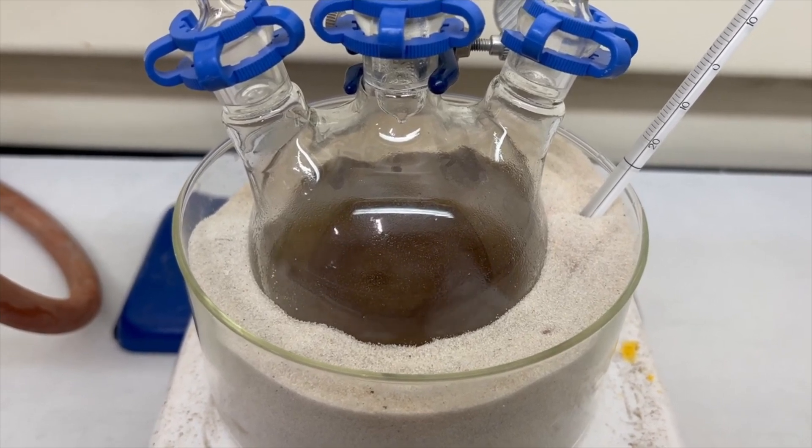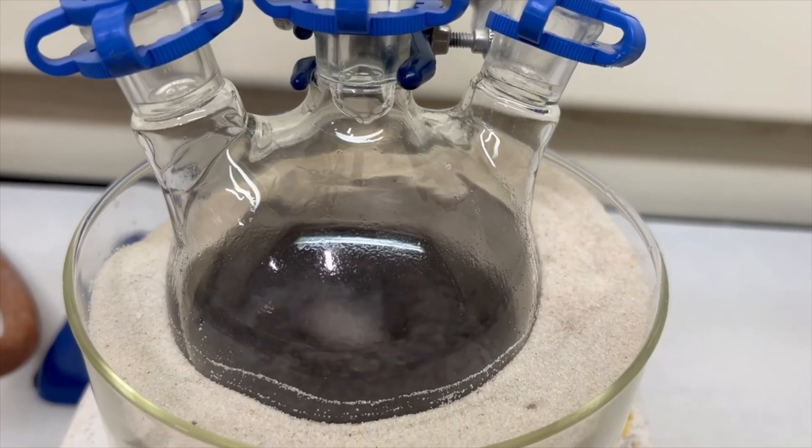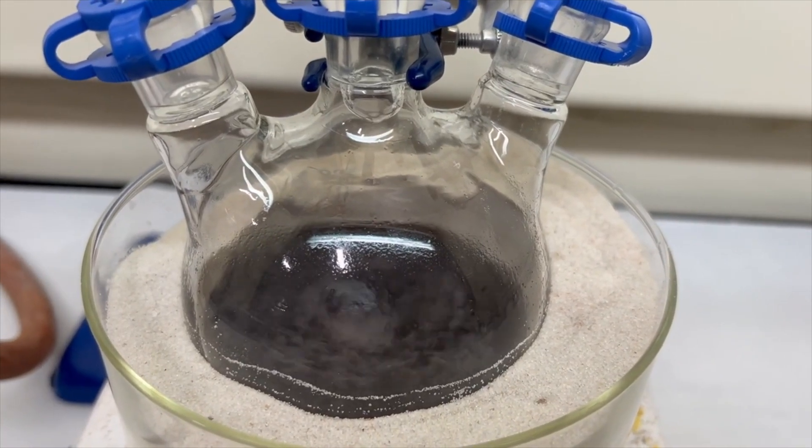Welcome back to Wheeler Scientific. This video will use a previously produced reagent to produce hexachloropropene, which will then be used to produce uranium tetrachloride.